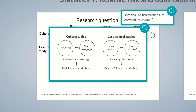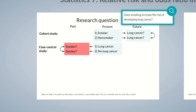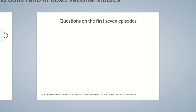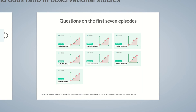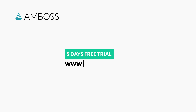Theoretically, cohort studies can measure both the relative risk and the odds ratio. However, the relative risk is usually preferred as it precisely answers the study question: does smoking increase the risk of developing lung cancer? Have you watched all 7 episodes of our series on statistics? To test your knowledge from previous episodes, we've put together a quiz, which you can access through the link. Good luck!